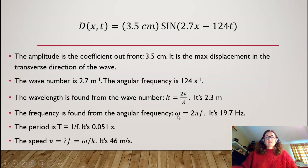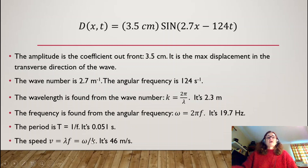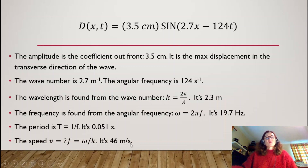The frequency is found from the angular frequency using ω = 2πf: setting 124 = 2πf and solving gives f ≈ 19.7 Hz. The period is T = 1/f = 1/19.7 ≈ 0.051 seconds. Finally, the speed is v = λf, or equivalently v = ω/k: dividing 124 by 2.7 gives v ≈ 46 meters per second. So that's the speed of the wave.